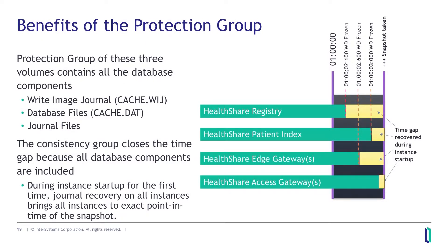Here's the benefit of the protection group — this is where the secret sauce comes in. We have the multiple components: the WIJs, the database files, the journal files. With our 1 a.m. backup, the snapshot doesn't happen until all instances have come back and reported as clean. Then the snapshot is taken across all volumes — database volumes, journal volumes, everything — and it's taken after all instances are frozen. Across all volumes, that snapshot is consistent at an exact point in time. That's the benefit of the protection groups.